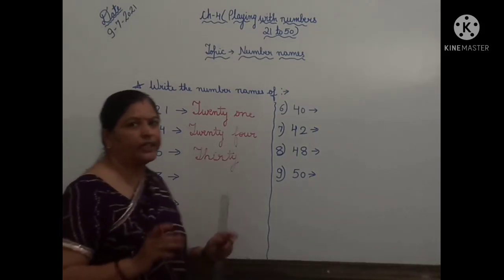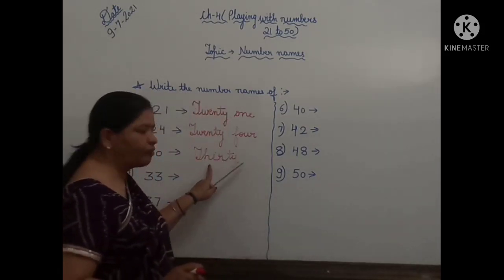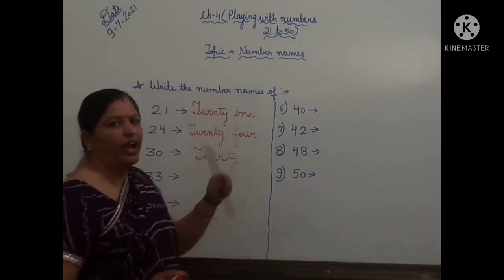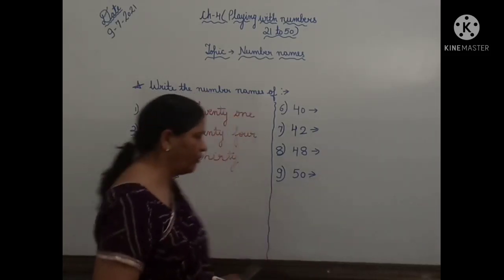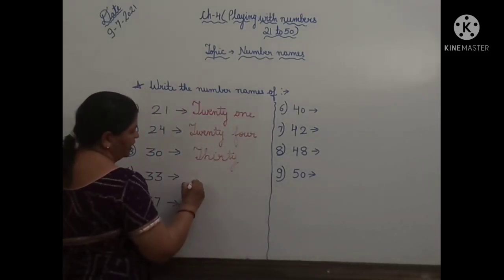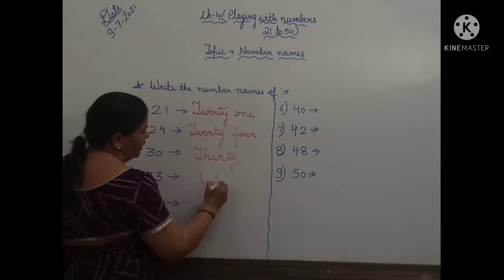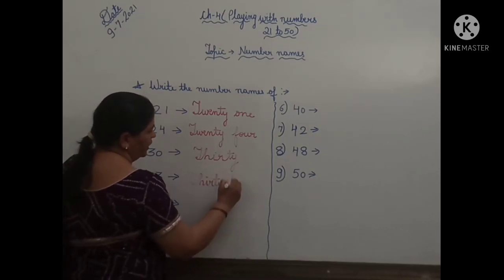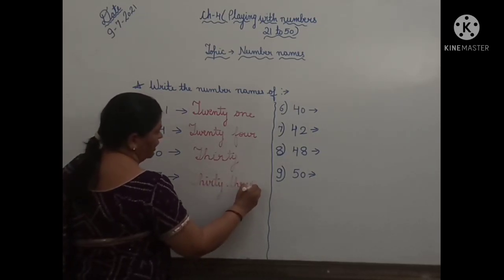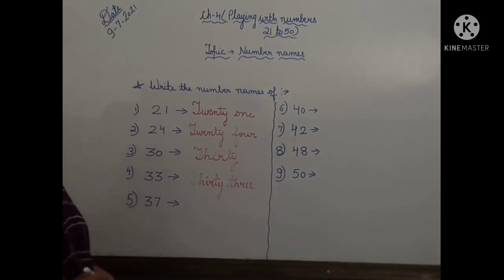Next number, 33. So first you have to write the spelling of 30 and then you have to write the spelling of 3. Again, T-H-I-R-T-Y, 30. T-H-R-E-E, 3. 33.